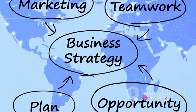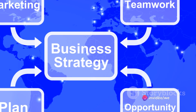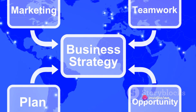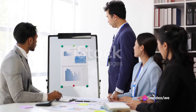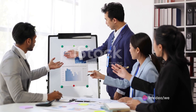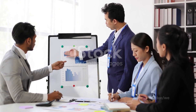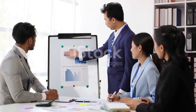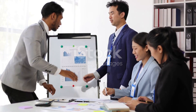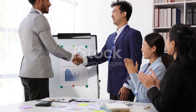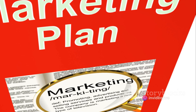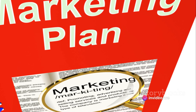Next, the organizational plan. This section outlines your business structure. Who is in charge? How are decisions made? What roles and responsibilities does each team member have? The organizational plan is like the trunk of your business tree, providing support and guiding the growth.